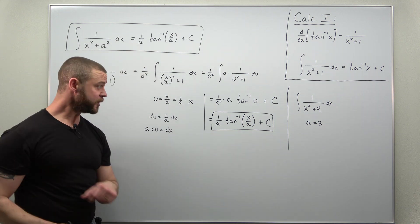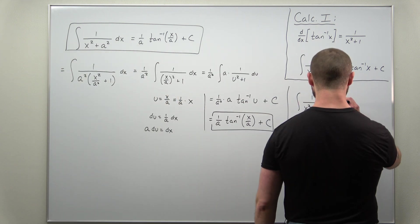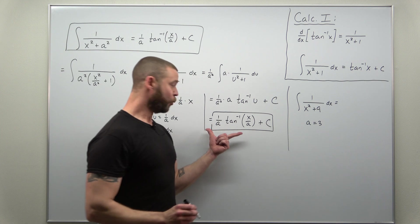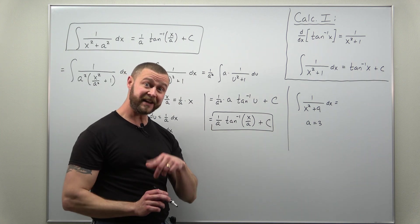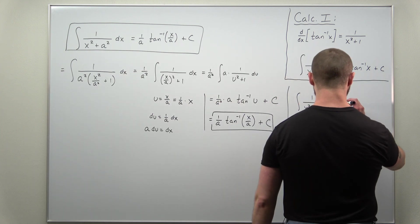Think of 9 as 3 squared, so the value for a that we're going to be using in this formula is 3. And we just plug that in: we get 1 over 3 times inverse tangent of x over 3. So 1 third.